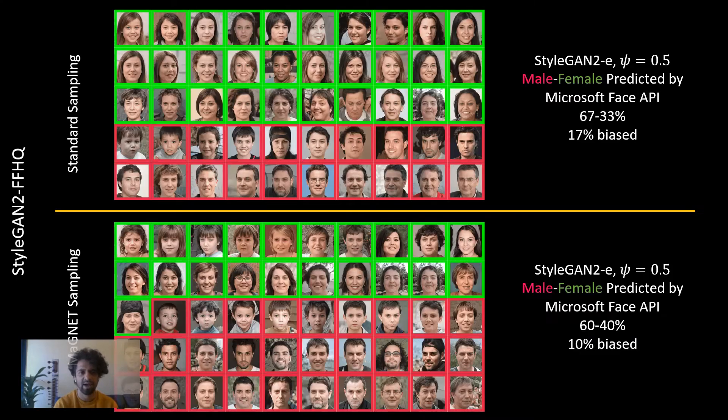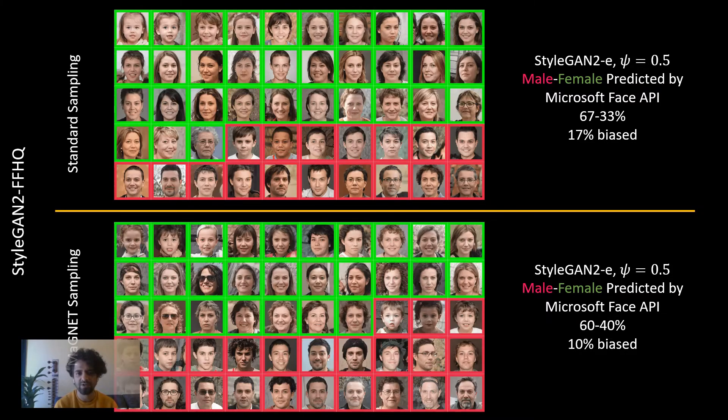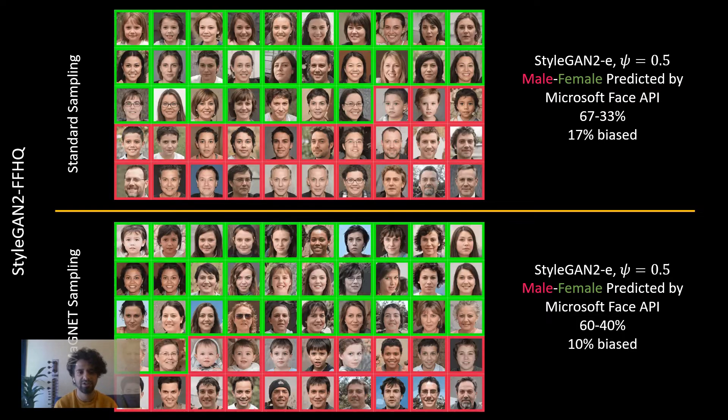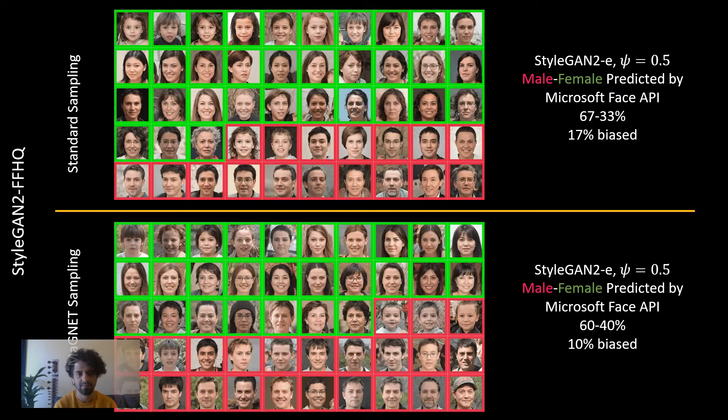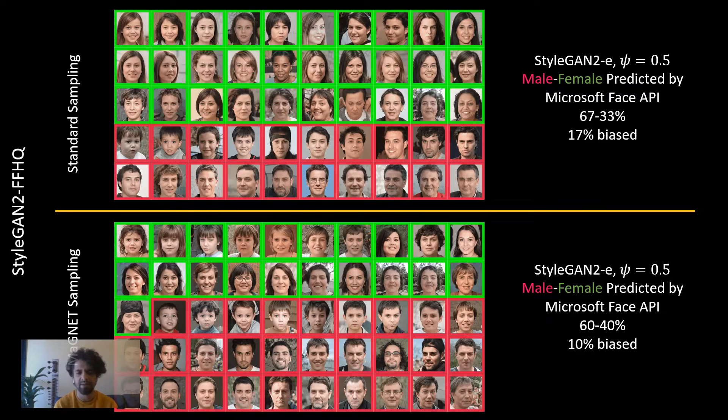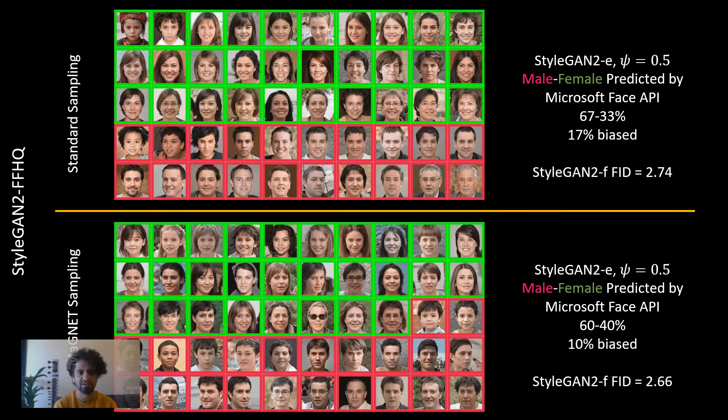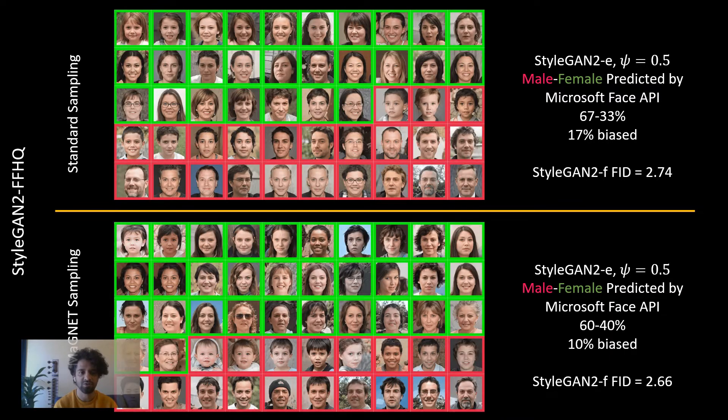By using MAGNET on StyleGAN2 trained on FFHQ, we can greatly increase sampling diversity and decrease gender bias by 41% without requiring any labels or retraining. Since MAGNET sampling greatly increases the diversity of sampling, by mixing MAGNET with standard sampling, we can surpass the state-of-the-art FID for StyleGAN2 on FFHQ.